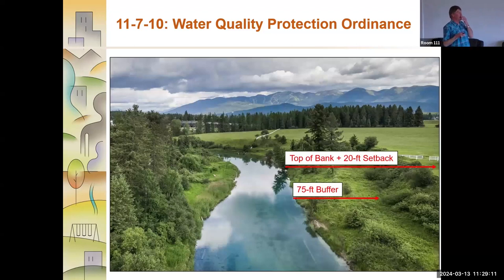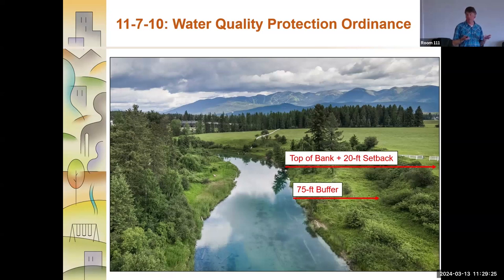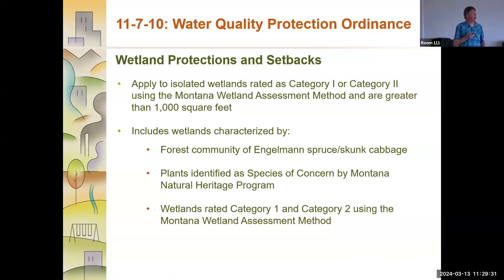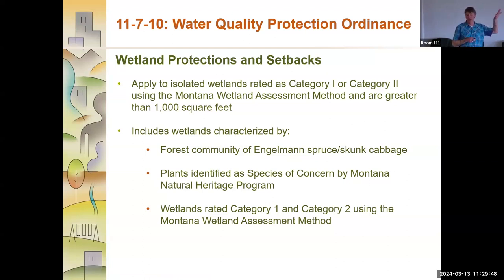This is an example of how these setbacks are applied. This photo demonstrates the 75-foot buffer along the riparian zone, and in this case it would actually be the top of bank plus the 20-foot setback, whichever is greater. In terms of wetland protections — and I'm not a wetland scientist, although I work with many like Tom Barker — we applied all our wetland protections and setbacks to not only jurisdictional wetlands but also isolated wetlands. In the Whitefish area, we have so many pothole wetlands without a direct surface water connection, and we felt those were equally important to protect.